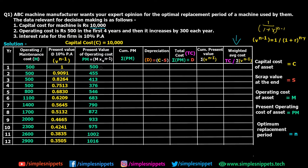Now calculate the cumulative PM — the running sum of all present operating cost values. For year 1 it is 500, for year 2 it is 500 + 455 = 955, for year 3 it is 955 + 413 = 1368, and so on. I've filled out this entire cumulative present operating cost column.